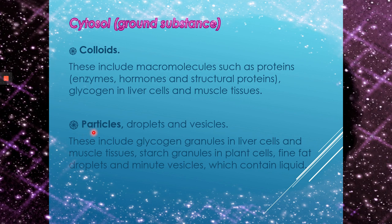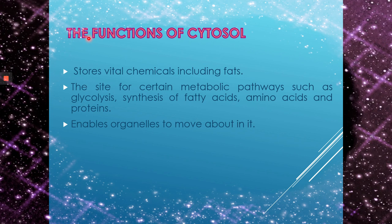Particles include droplets and vesicles such as glycogen granules in liver cells and muscle cells, starch granules in blood cells, fine fat droplets, and vesicles containing various substances. Cytosol functions to store vital chemicals including fats. Cytosol is also the site for certain metabolic pathways such as glycolysis, synthesis of fatty acids, amino acids, and proteins. Cytosol also enables organelles to move about within it.